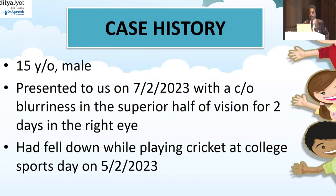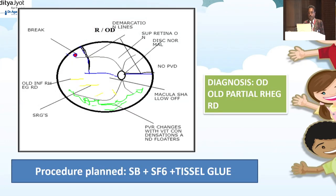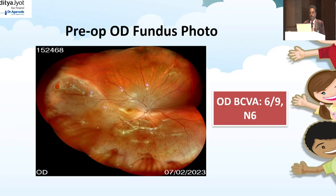A 15-year-old male presented with blindness in the superior half of vision for two days in the right eye, after his head fell while playing cricket on February 5th 2023. The diagnosis was an old partial rhegmatogenous retinal detachment with a break on the temporal side and demarcation lines indicating chronicity, along with subretinal bands around the macula. The problem with children is that they hide injuries from parents for fear of punishment, and parents do not take children for periodic checkups.